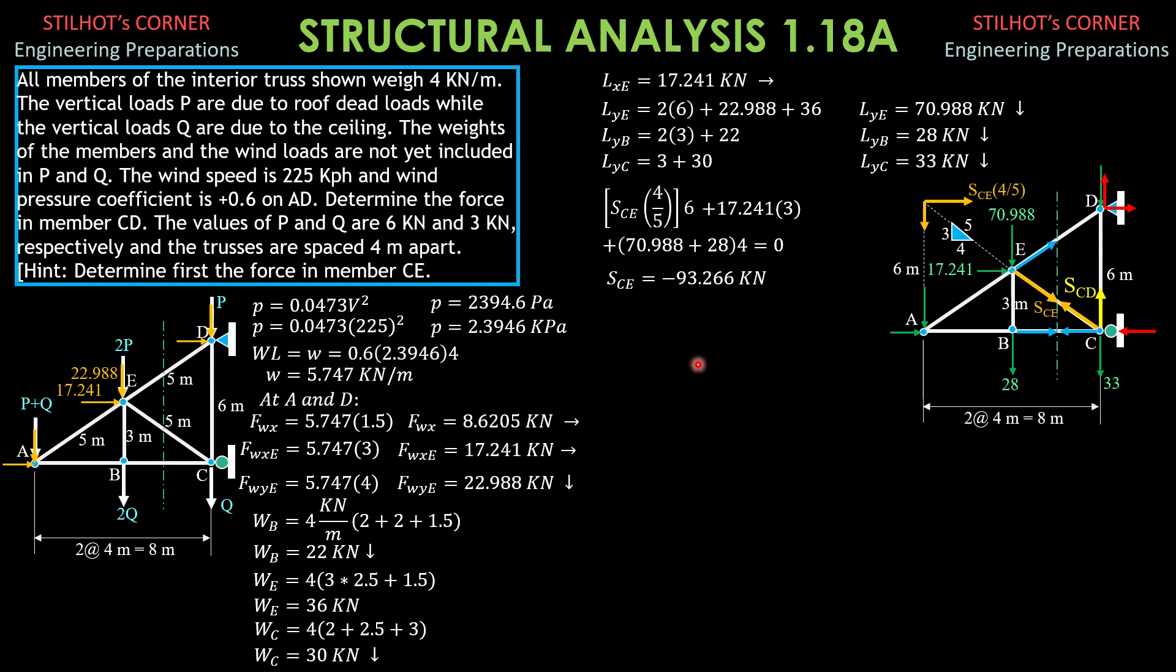So summation forces Y equals 0, SCD plus the vertical component of SCE which is negative 93.266 times 3 over 5 then equals 33. So again, SCD summation forces Y plus negative 93.266 times 3 over 5 equals downward load which is 33 at C.